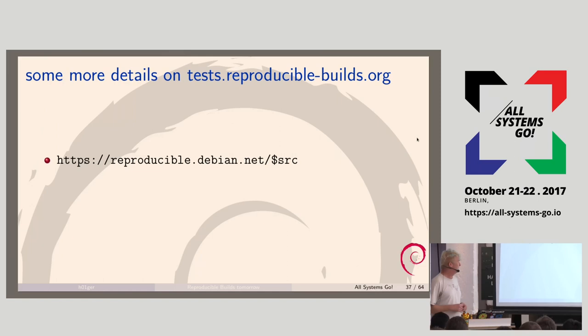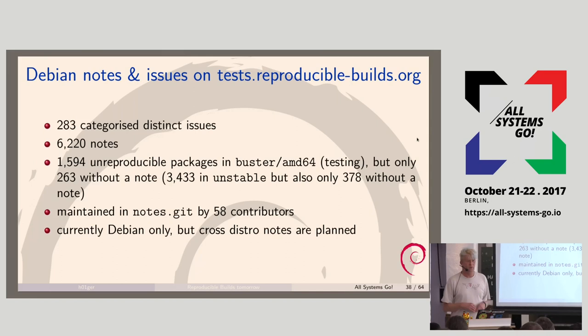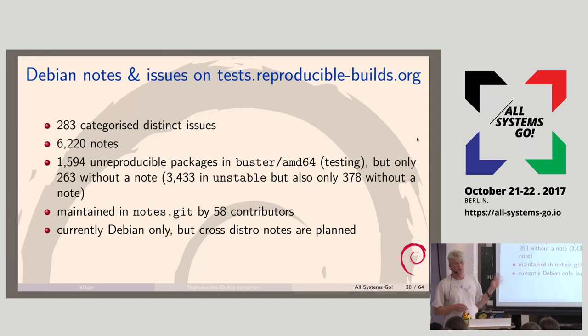For Debian, you can go to a URL and see the package status for all 25,000 packages. We also have 49 package sets — build-essential, base packages, all KDE packages, all Java packages — so you can look at just a small part of the archive. And we have notes: a simple YAML repository where we take notes about certain issue classes and packages affected by them. We have over 6,000 notes now. We want to do this cross-distro, because many issues are the same in different distributions.